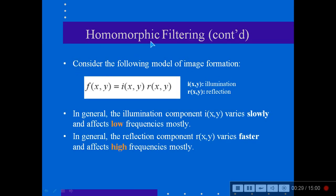So how homomorphic filtering is considered or it was generated? We consider the following model of image formation: this is an image considered to be multiplication of illumination, that is i(x,y), and reflection r(x,y). So in general, the illumination component varies slowly and affects low frequencies mostly.